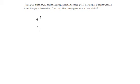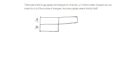Based on the question, I know that 4 over 7 of the apples is actually 240 more than 3 quarters of the mangoes. So here is 3 quarters of the mangoes, and here is 4 over 7 of the apples.